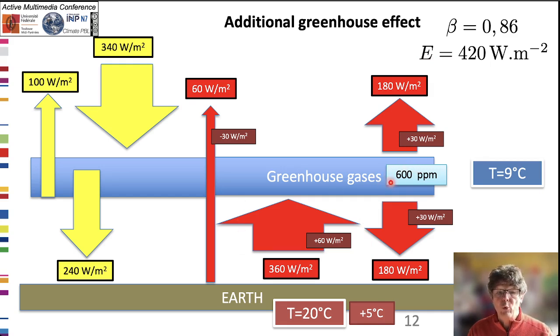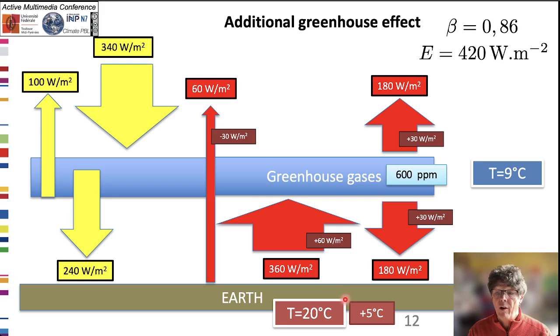For example, the doubling of CO2 up to 600 parts per million (ppm) would lead to an increase of 5 degrees Celsius in the Earth's temperature.